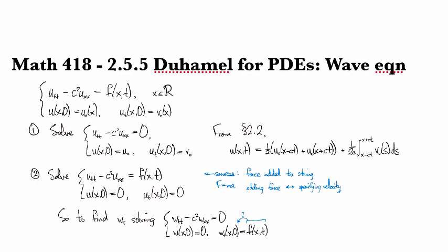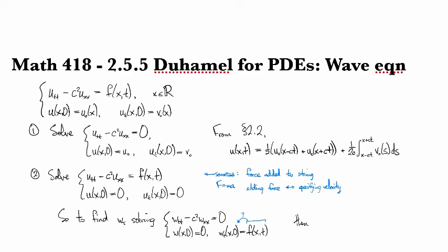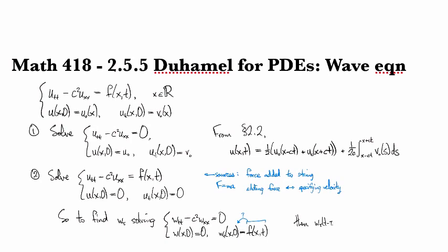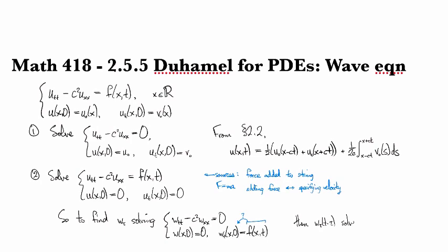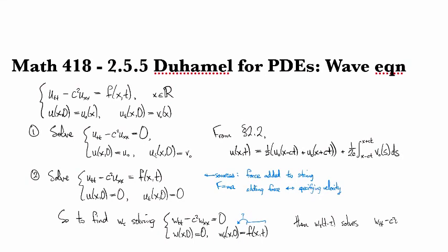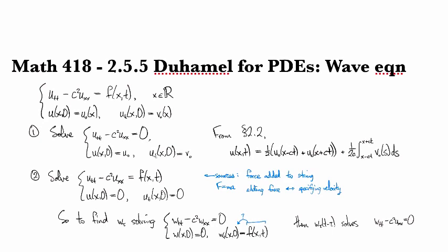So we solve that one, and then W tau (T minus tau) solves the wave equation.